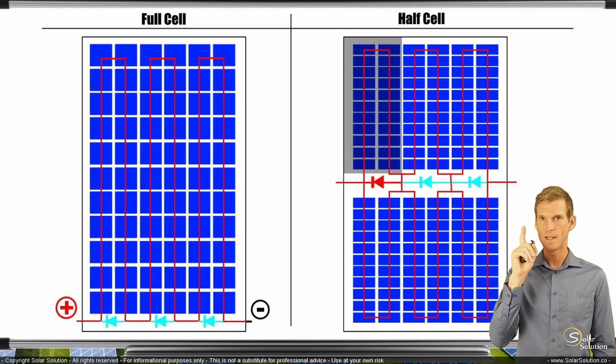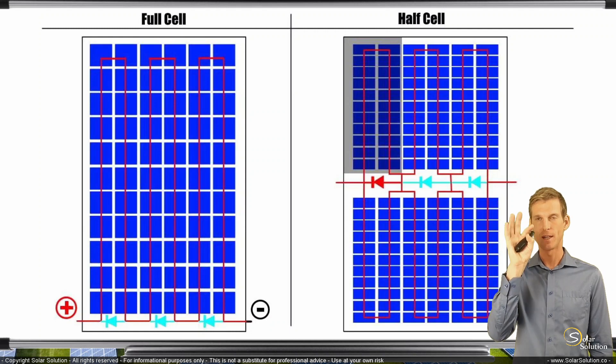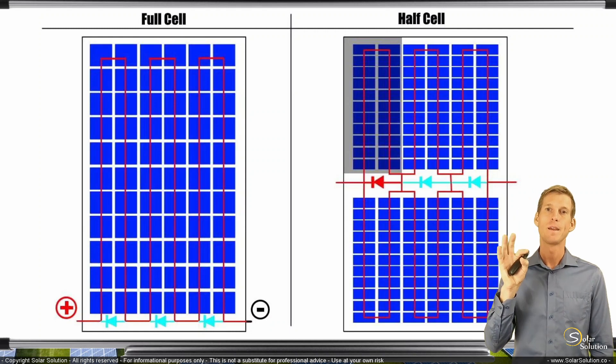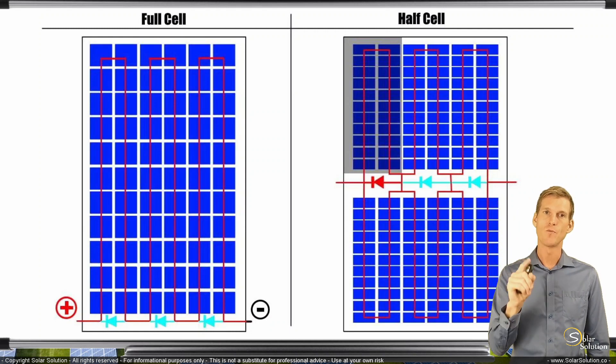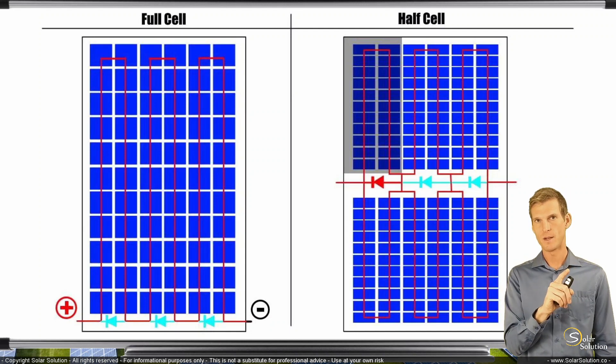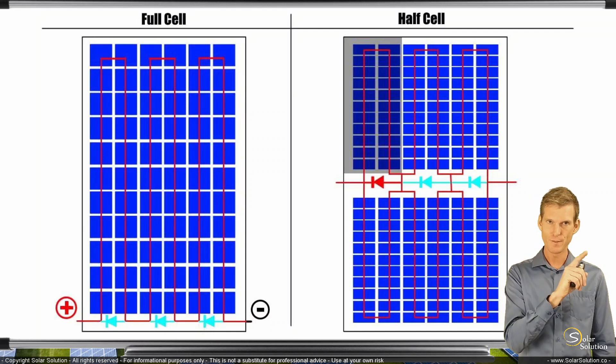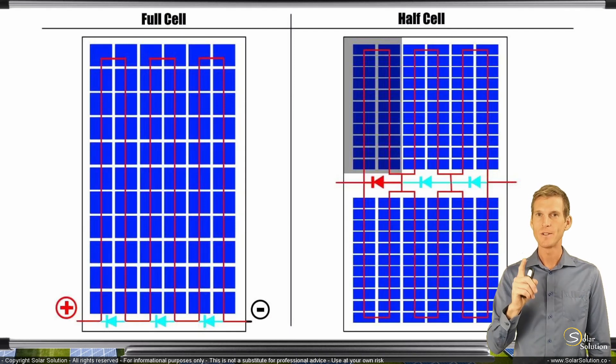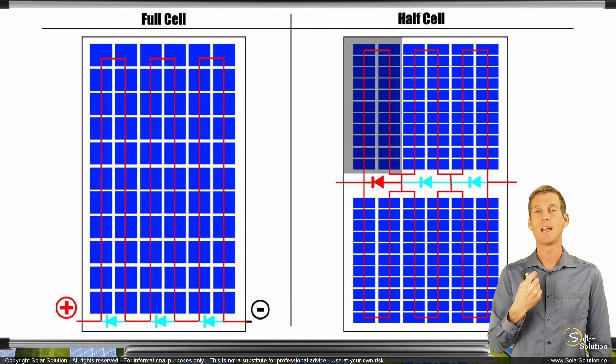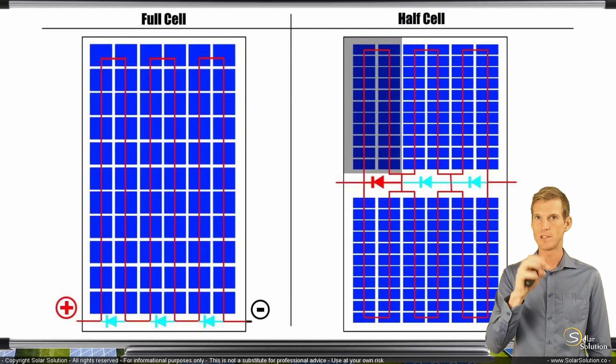But the end result is that while you're getting one local shading spot on the module, some kind of a leaf or whatever on it, now instead of losing one-third of the power output of the panel, as you had with the full cell regular photovoltaic module, now you're only losing one-sixth, which is a considerable advantage, because it can happen due to something blocking the irradiation to the cell, such as a leaf.